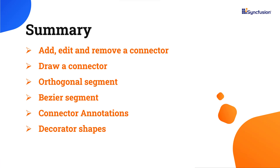In this video, I have shown you how to add a connector in the code behind, at runtime, and draw a connector using the drawing tool. You also saw how to customize and remove connectors from the diagram canvas. Lastly, I showed you the different connector segments and decorator shapes. You can download a working example from the GitHub link in the description. I've also included a link where you can see if you're eligible for our community license, which will provide you with a free license key. Thank you for watching — if you found this video useful, give it a like and subscribe to our channel.